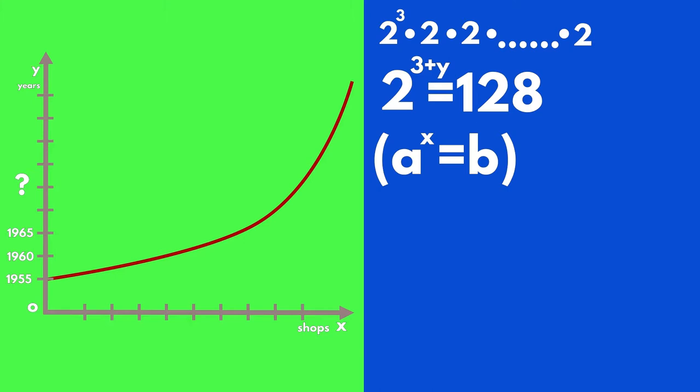Let's continue. 128 can be written in form 2 raised to the power of 7. So, the previous equation can be rewritten. Since we have the same basis, 2, in order to keep the equality true, exponents have to be equal. 3 plus y equals 7.